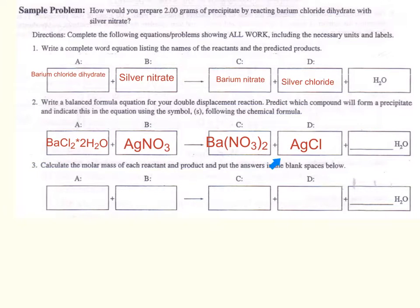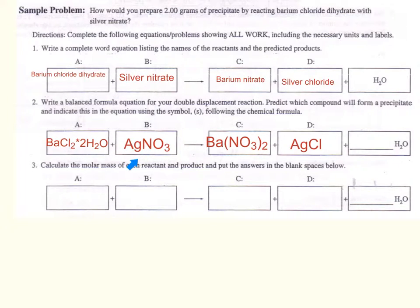We have written our equation correctly. We have barium chloride dihydrate — barium has a +2, chlorine -1, crisscross gives us BaCl₂ — with dihydrate meaning 2 waters. Silver nitrate: silver has +1, nitrate has -1, crisscross gives AgNO₃. This makes the product barium nitrate: barium +2, nitrate NO₃ at -1, crisscross gives Ba(NO₃)₂. The other product is silver chloride: silver +1, chlorine -1, crisscross.